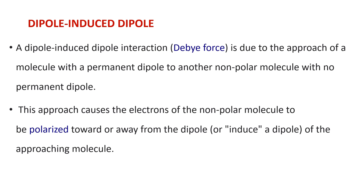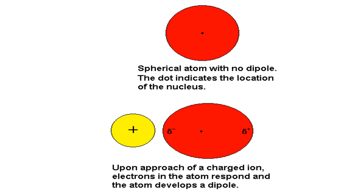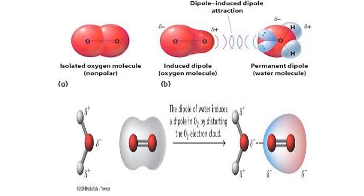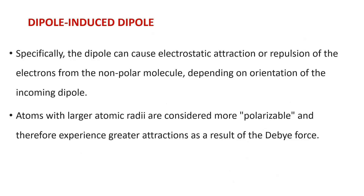This force is very weak with a bond energy of about one kilojoule per mole. A single non-polar molecule is shown in the figure as a spherical atom with no dipole; the dot indicates the location of the nucleus. Upon the approach of a charged ion, the electrons in the atom respond and the atom develops a dipole. Another example for dipole-induced dipole interaction is the interaction between an oxygen molecule and a water molecule. The dipoles of water induce a dipole in oxygen by distorting the oxygen electron cloud. The dipole can cause electrostatic attraction or repulsion of the electrons from the non-polar molecule depending on the orientation of the incoming dipole.